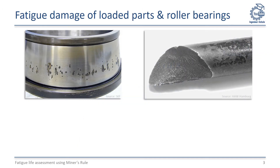When loaded parts and roller bearings are operated over a long time at a certain load level, they often break down due to fatigue damage. Typical fatigue damage patterns are shown in these pictures. At roller bearings, shown on the left side, small pinholes occur on the surface of the race — the so-called pittings — and small grains break out so the bearing can no longer be operated. At the torsionally stressed beam on the right side, we can see a typical fatigue crack that initiated at the top and grew inwards along lines of rest until a force fracture destroyed the remaining cross-sectional area.